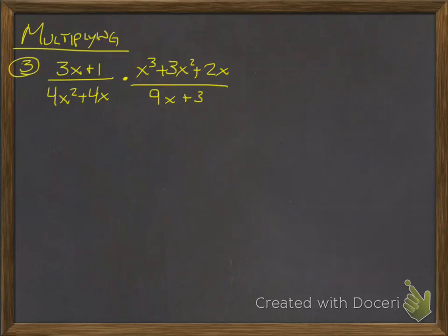Okay, so when I'm multiplying, very similar. You need to factor all parts to it, both numerators and both denominators. So for this one, the three x plus one cannot be factored. I can't factor anything out. It's linear. The numerator for that one, I can factor out a four x, and I'm left with x plus one.